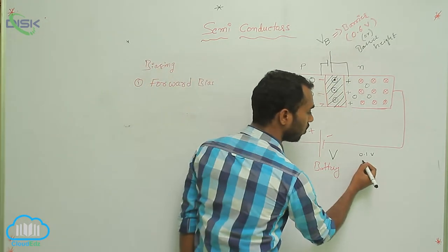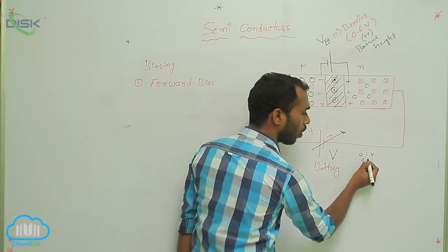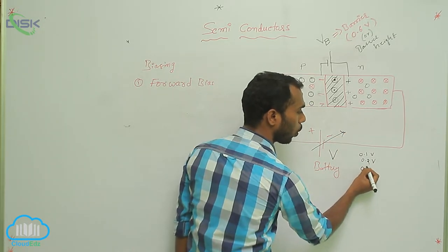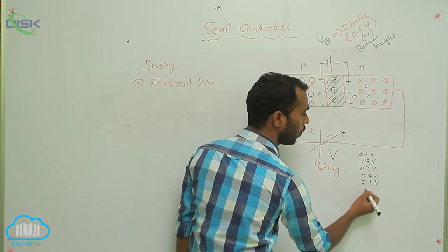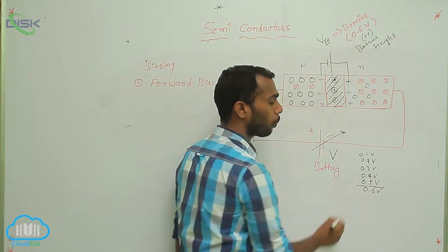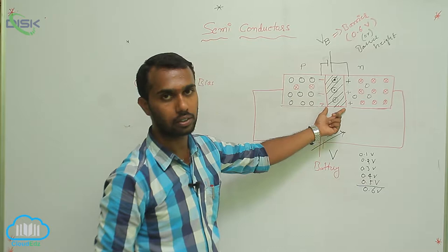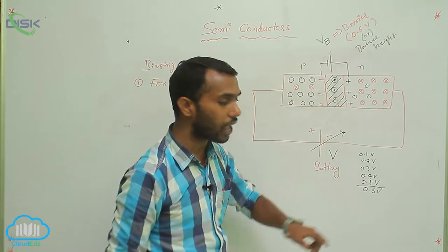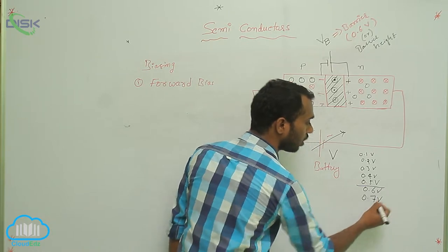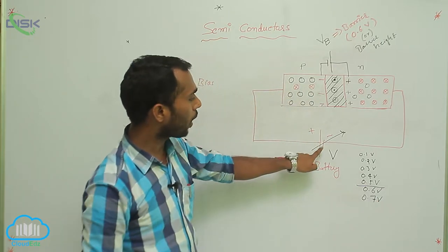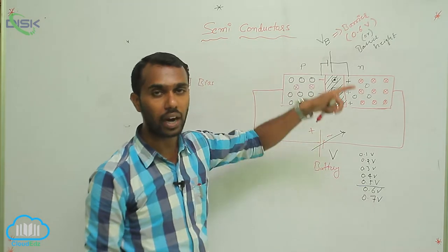If you increase — 0.1, then 0.2 volts, 0.3 volts, 0.4 volts, 0.5, and 0.6 — up to 0.6 volts there is no change in the width. If you apply more than 0.6, say 0.7, 0.8, and so on — if you apply a potential more than the barrier potential, what happens?